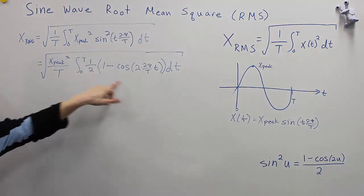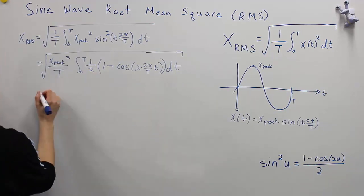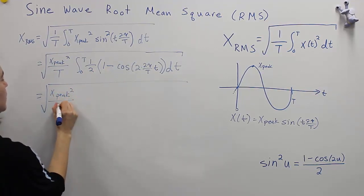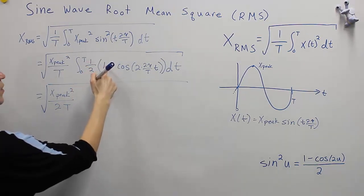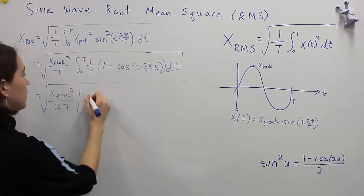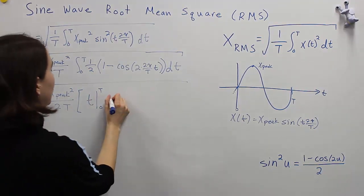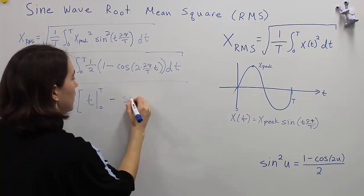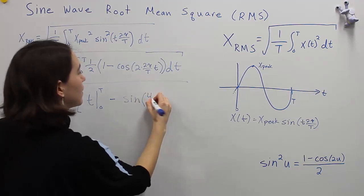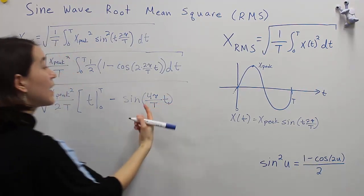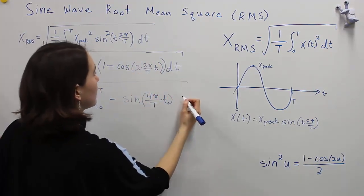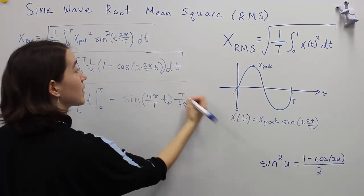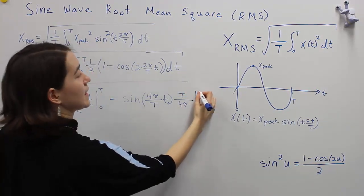We can move out the 1/2 again, because it doesn't depend on t, and then we'll go ahead and take the integral of these two values. So we get xpeak squared over 2T. The integral of 1 is just t, evaluated at 0 and T. Minus — we have to take the integral of the cosine term, which gives us sine. We maintain this value inside, and then divide by the derivative of the argument, which is 1 over 4π, moved up to the top. We'll evaluate that at T and 0.